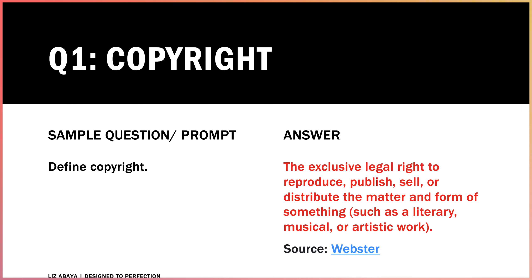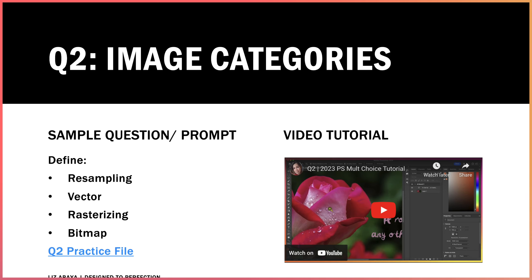Intellectual property is the term that's used to refer to any literary, musical, or artistic work. You're going to be asked to define several different image categories, including the process of resampling an image, the difference between a raster and a vector file, and how a raster and a bitmap are related. So let me show you a few different things that you're going to need to know.